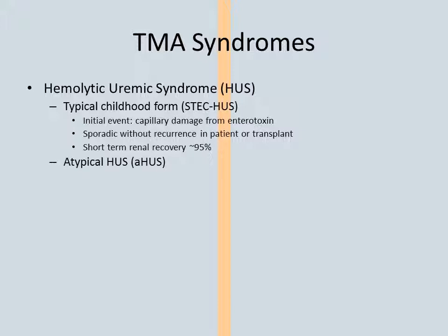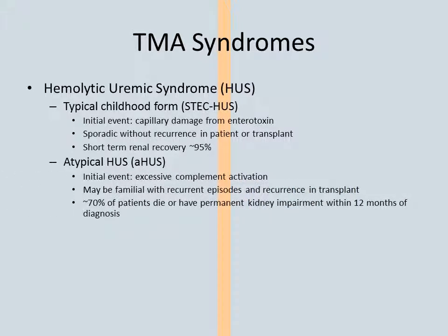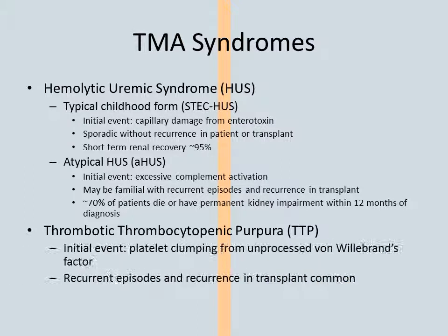Atypical HUS is now known to be a disorder of complement regulation. This disorder is often familial and frequently leads to permanent kidney failure or death. Thrombotic thrombocytopenic purpura results from unprocessed von Willebrand factor. Without treatment, these patients also have a poor prognosis.